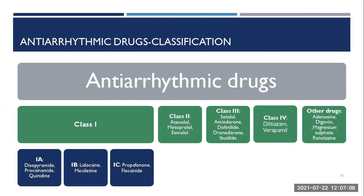Let's start with the classification of anti-arrhythmic drugs. They are classified into four classes. Class 1 has three subclasses: Class 1a, Class 1b, and Class 1c. Examples of Class 1a are disopyramide, procainamide, and quinidine. Class 1b examples are lidocaine and mexiletine. Class 1c examples are propafenone and flecainide.